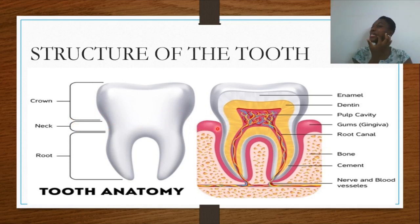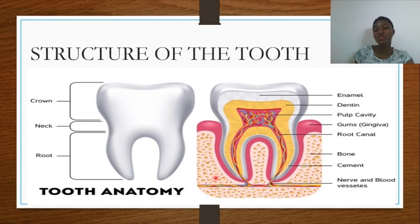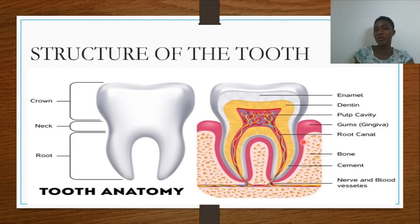At the neck region we have the gum. The gum is the structure you see beneath the whitish enamel when you smile. The gum runs through to the root region and is embedded within the jawbone. The jawbone is within the roots and helps hold the teeth in place, aided by the periodontal membrane which runs through the jawbone and the tooth, allowing the tooth to sit firmly in place.